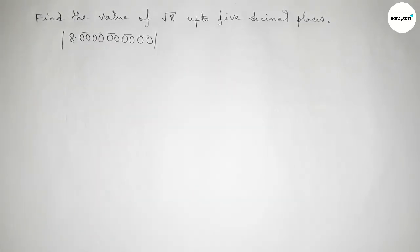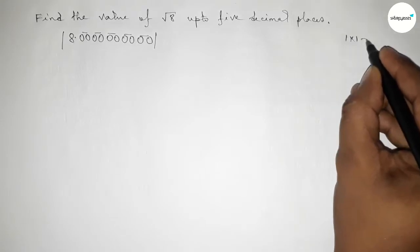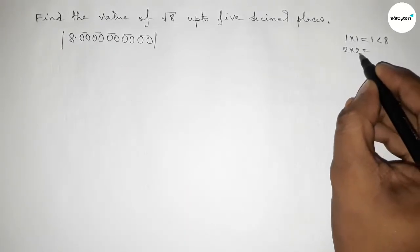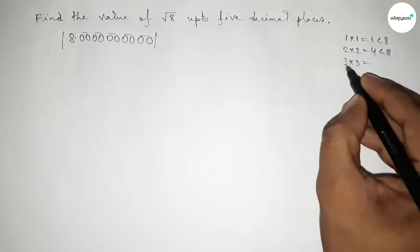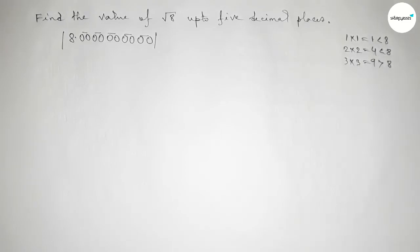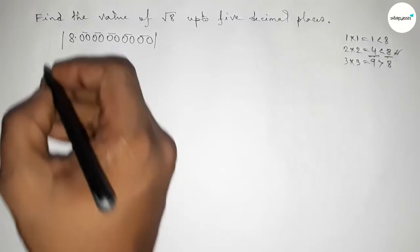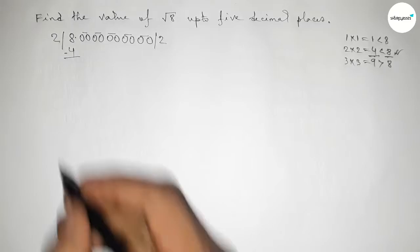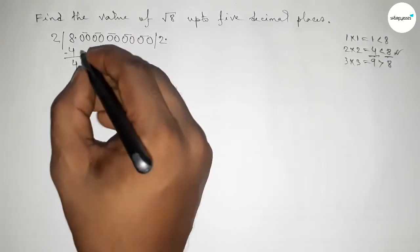Draw the division line on both sides. We need to choose a number and multiply it by itself so the result is less than and almost near 8. Taking 1: 1×1=1, not near enough. Taking 2: 2×2=4, less than 8 and almost near. Taking 3: 3×3=9, greater than 8. So we take 2, write 4 below 8, and subtract to get remainder 4. Place the decimal point.